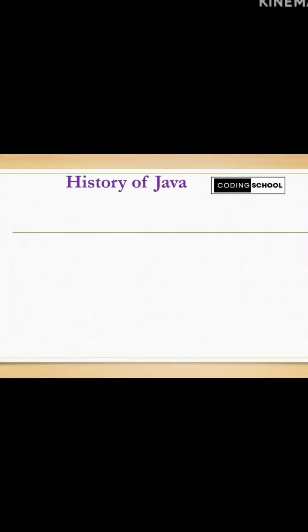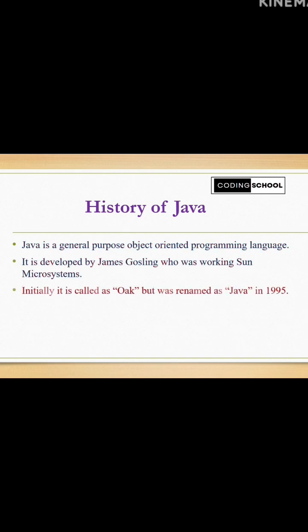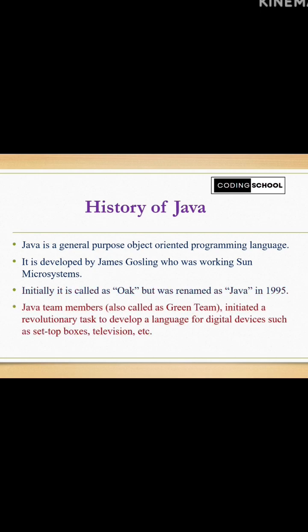Let's see what is the history of Java. Java is a general purpose object-oriented programming language developed by James Gosling, who was working in Sun Microsystems. The first name of this programming language was Oak, but it was renamed as Java in 1995. Team members of Java initiated a revolutionary task to develop a language for digital devices such as set-top boxes, televisions, etc.